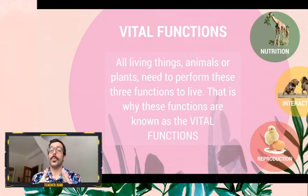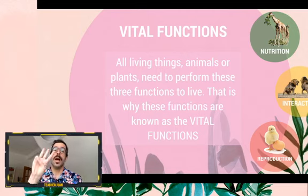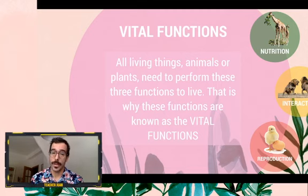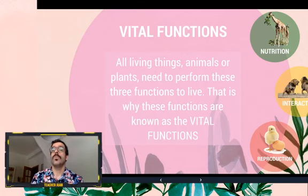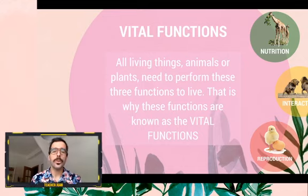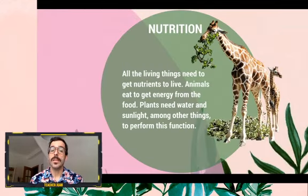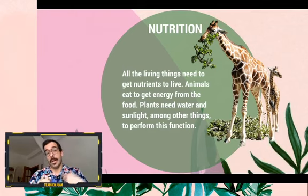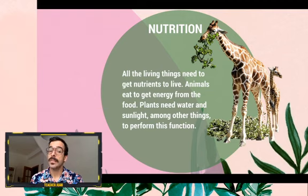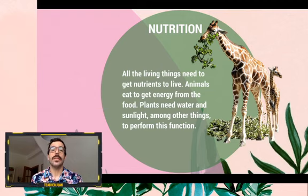So these are functions that we — the animals or the plants, all the living things — need to do to live, and they are three. The first one is nutrition. As you know, nutrition has to do with food. All living things need to get nutrients to live. Animals, like us or like the giraffe here, eat to get energy from the food. Plants need water and sunlight, among other things, to perform this function. So we all need to eat and get nutrients.